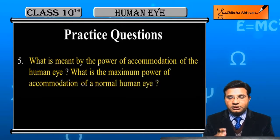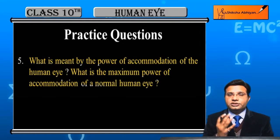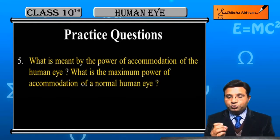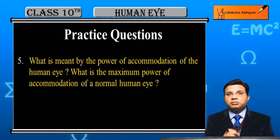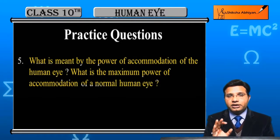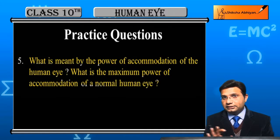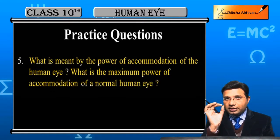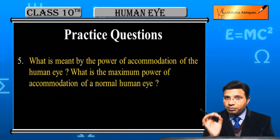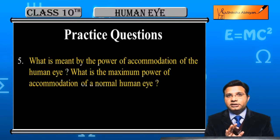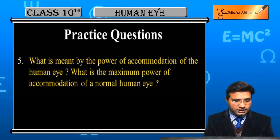पहले हमें बताना है कि power of accommodation क्या होता है, फिर उस power की maximum value भी बताना है। Power क्या होता है — reciprocal of focal length। हमारे eye में एक eye lens होती है, उसका भी एक focal length होता है, उसकी हमें power बतानी है।